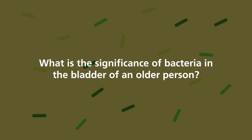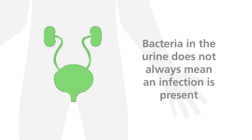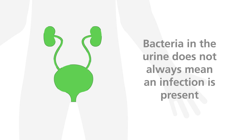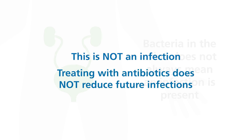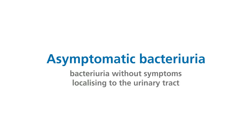We will discuss the symptoms and signs of UTIs in older people shortly. But firstly, let's explore the significance of bacteria in the bladder of an older person. Bacteria in the urine does not always mean an infection is present. In older people, bacteria can live harmlessly in the bladder without causing any problems. This is not an infection, as the bacteria are not causing any harm, and treating with antibiotics does not reduce future infections. This is called asymptomatic bacteriuria.